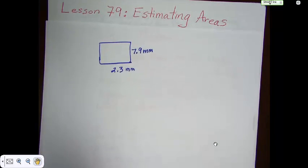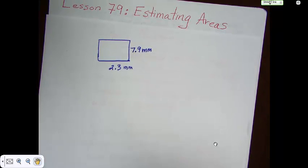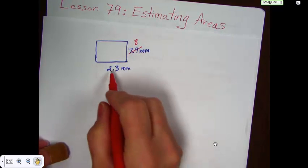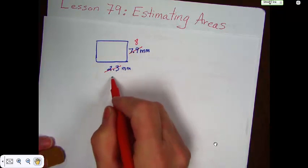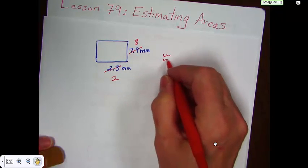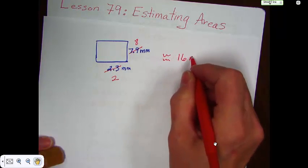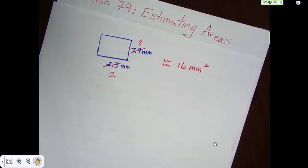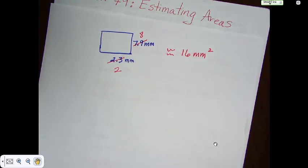Well, in that particular case, you would just round 7.9 up to 8 and you'd round 2.3 down to 2, and you'd take 2 times 8 and your answer would be approximately 16 millimeters squared. That's one way to estimate area. There's other ways to estimate area and that's kind of what I want to talk about today.